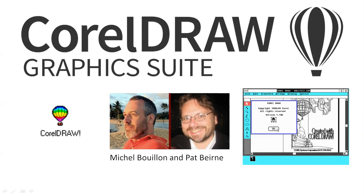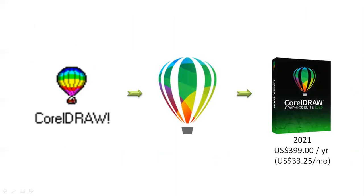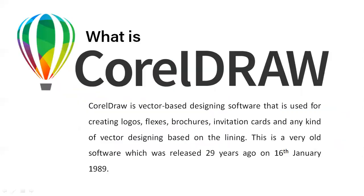They came up with the first version of CorelDRAW. On the left-hand side you can see the first icon of that software, and on the right side you can see the first release of CorelDRAW — the first version offered to the public in 1989 — and the software has evolved through different categories to CorelDRAW Graphics Suite 2021. As you can see, the price per year is about $400 and per month is about $33.25.